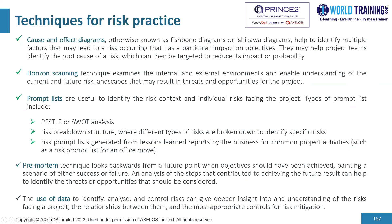There is the cause and effect diagram, also known as the fishbone diagram or the Ishikawa diagram. It is used to identify multiple factors that may lead to a risk occurring that has a particular impact on objectives. This may help project teams identify the root cause of a risk, which can then be targeted to reduce its impact or probability.